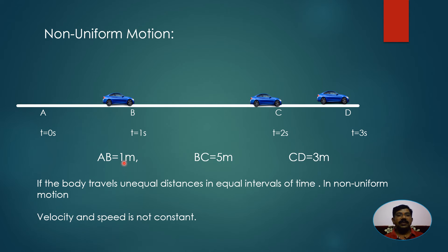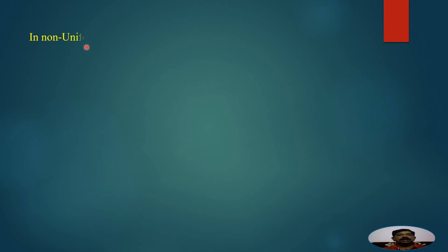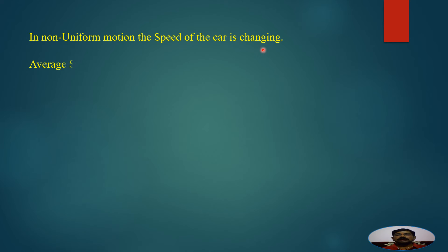In non-uniform motion the speed is changing, so we have to use the concept of average speed. Average speed is defined as total distance divided by total time taken. Whenever a vehicle or object moves in non-uniform motion, we use the concept of average speed.